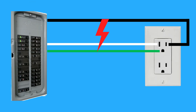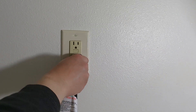A ground fault is similar to a short circuit, with the key difference being that it occurs when electricity finds a path to the ground before reaching its intended endpoint in the circuit. This usually happens when a live wire directly contacts a grounded part of the system, such as a metal wall box or grounded metal conduit. Similar to a short circuit, a ground fault can cause sparks, smoke, or even fire. Ensure the outlet is turned off at the breaker box before testing for continuity.